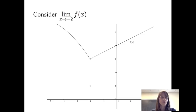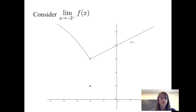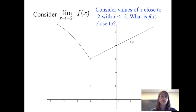Let's consider another example. Suppose we have the graph of y equals f of x given by this graph here, and we want to know the limit of f of x as x approaches negative 2. Let's again consider each of the one-sided limits. Let's consider the limit of f of x as x approaches negative 2 from the left — we want to consider values of x close to negative 2 and x less than negative 2.